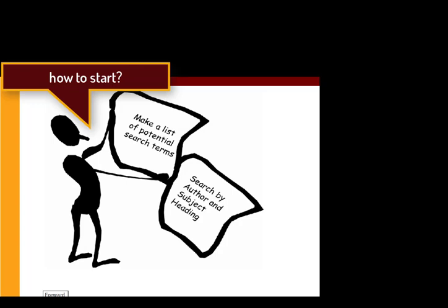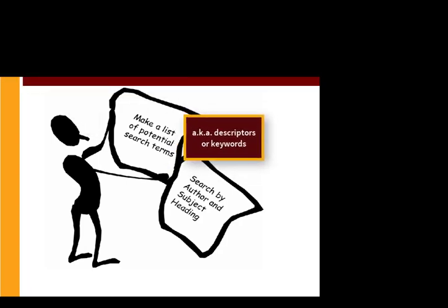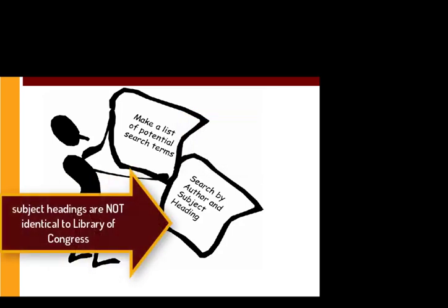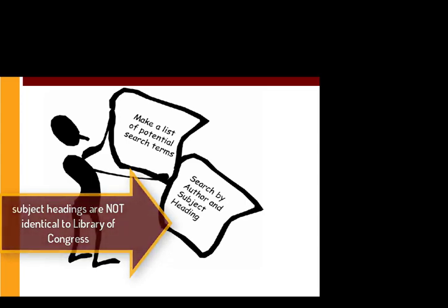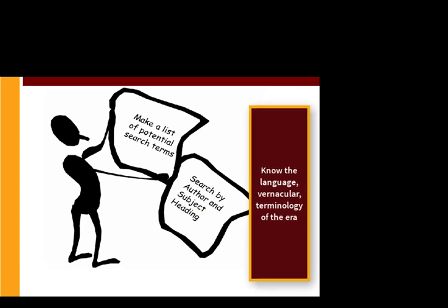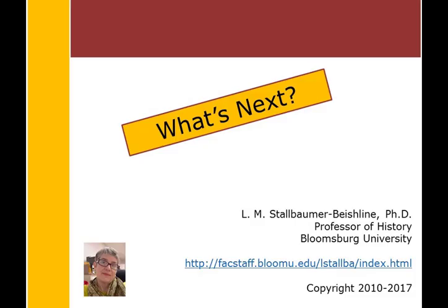First of all, I would make a list of potential search terms. You can search by author and by subject heading. But with respect to subject headings, oftentimes those subjects reflect the vernacular of the time, so you're not going to find, inherently, Library of Congress subject headings. As a result, you may have to play around a little bit and experiment with the subject terms that you're going to search by. In the next video, I'll demonstrate how to find magazine articles by offering up a specific example.